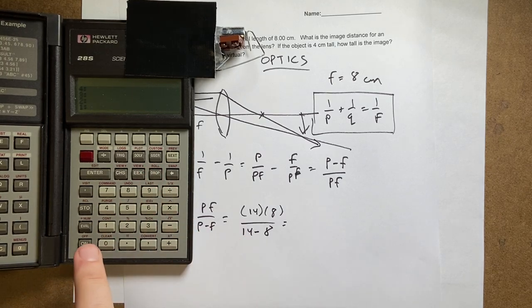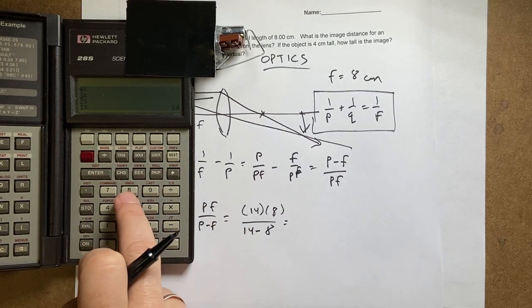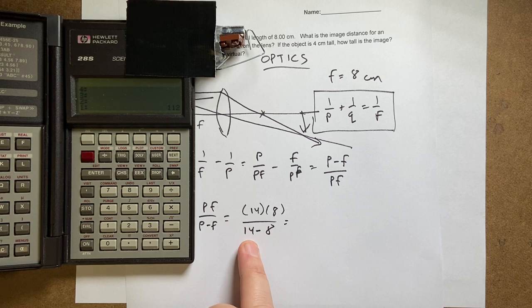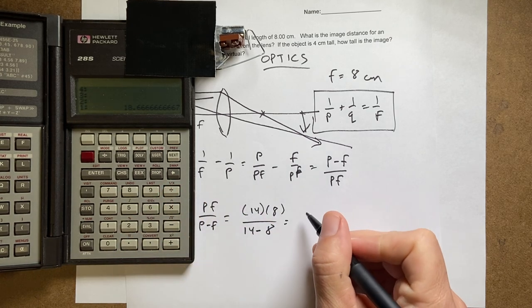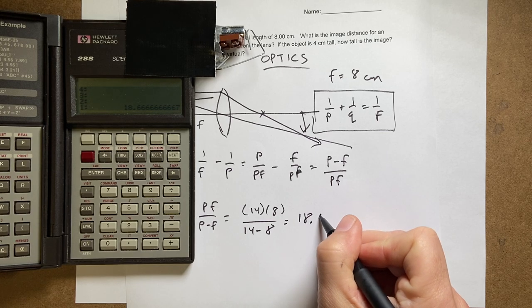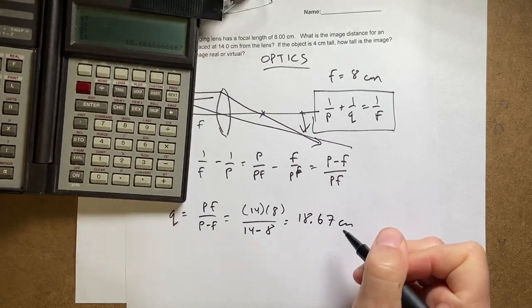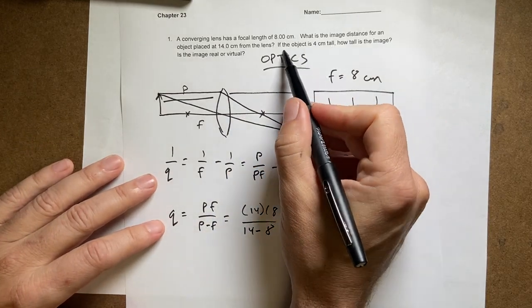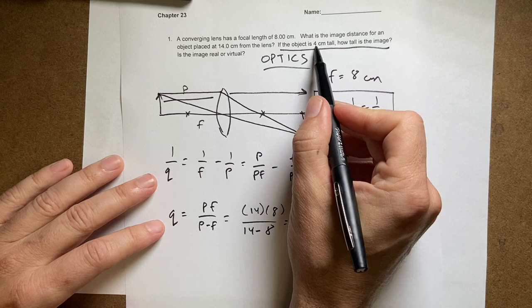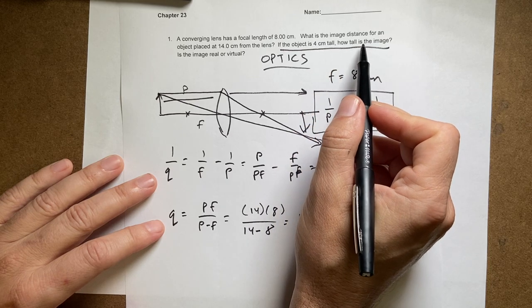So 14 times 8, and this is going to be 112. Then 14 minus 8 equals 6, divided by 6, so I get 18.67 centimeters. That's this distance right there. If the object is 4 centimeters tall, how tall is the image?